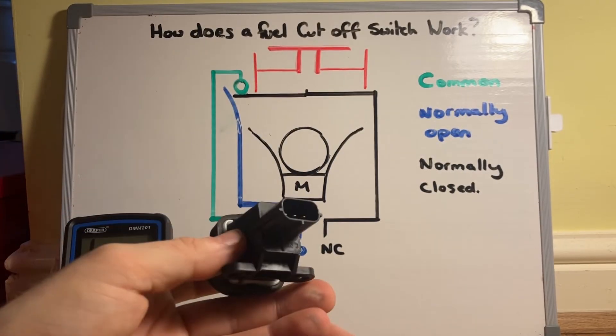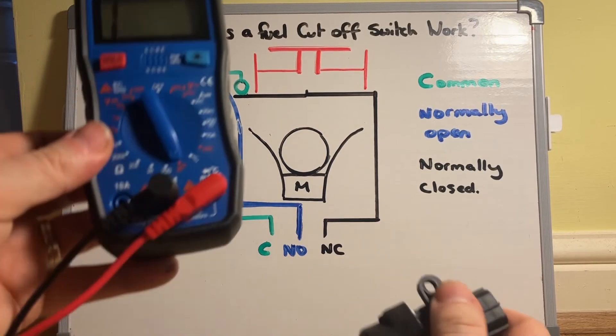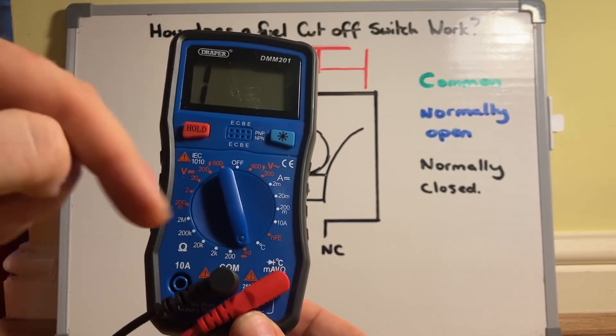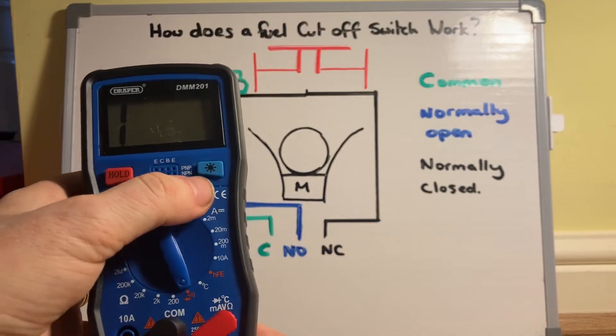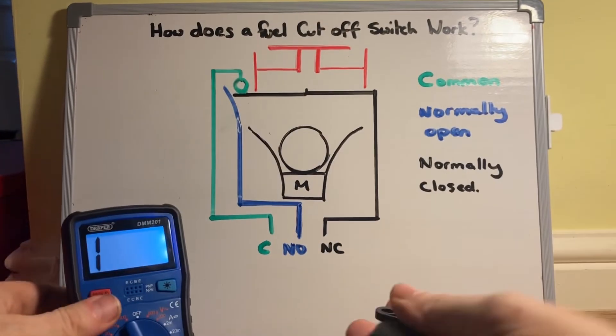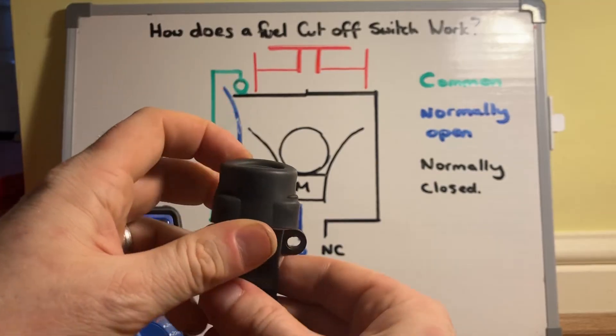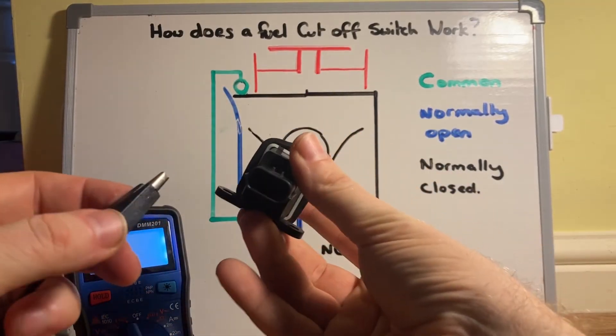We can prove what's happening here by just doing a simple continuity test. I've got my multimeter and I've set it to the continuity setting, so it's just going to send a little current through the circuit and make sure it's complete. So at the moment the ball is now back in the magnet and I'll click it down so it's as it would be under normal driving conditions.